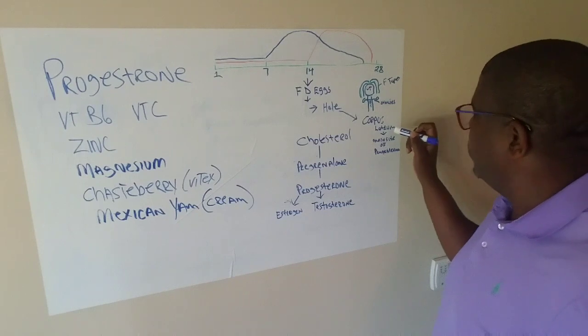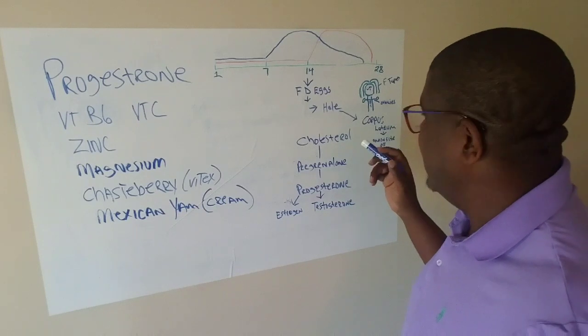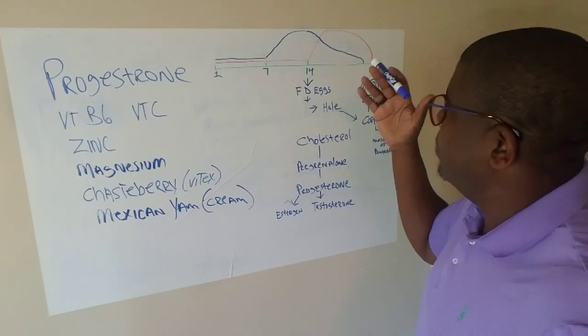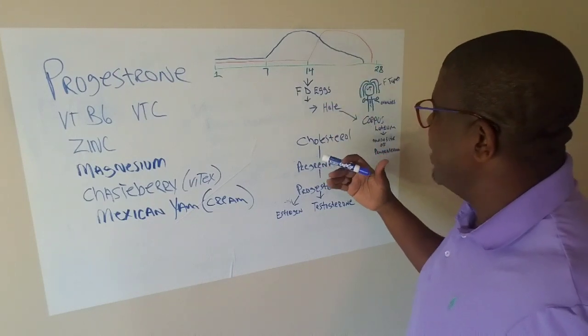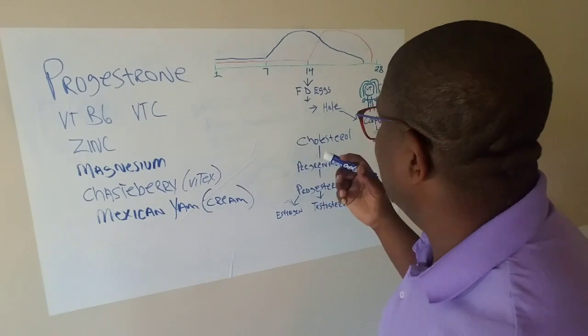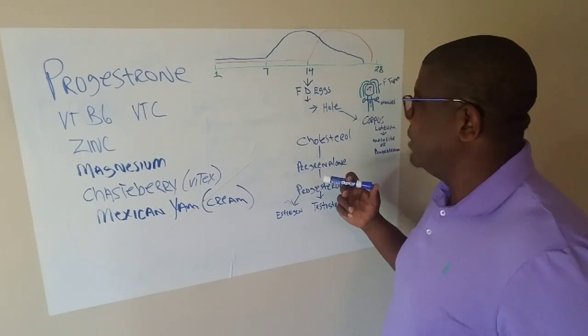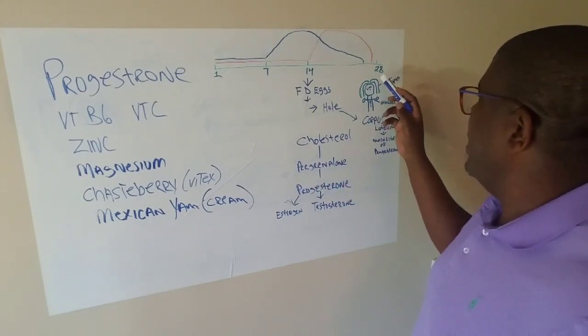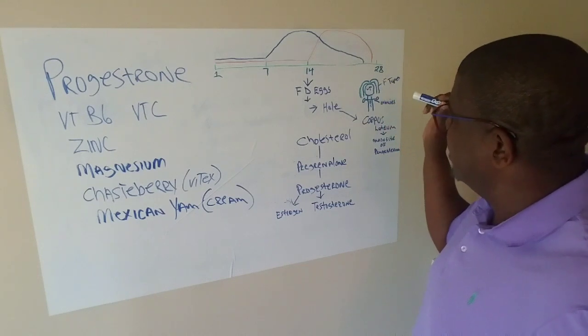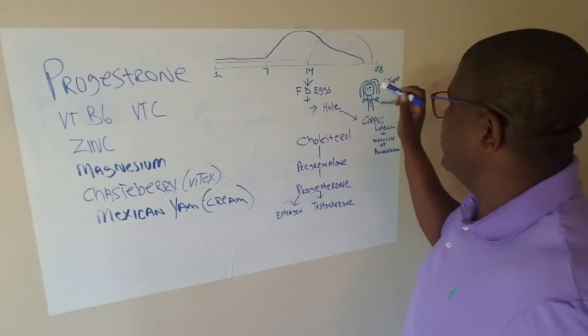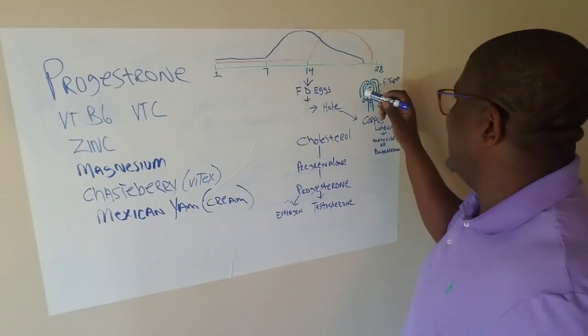Without the ovulation, without that cycle going the way it should go, then the body is not producing the hole that creates the corpus luteum and the main site of progesterone production. This is another reason why when you interfere with the natural cycle, those levels of progesterone are low and you may be going through all types of emotional and mental anguish. Now when that is drawn up into the fallopian tube, it goes into the uterus.